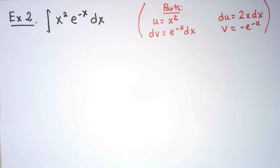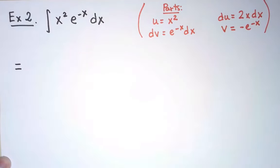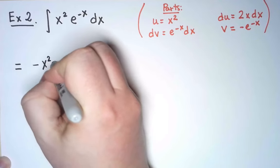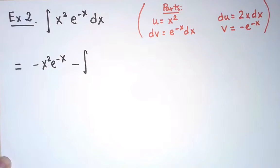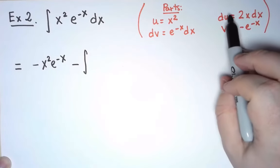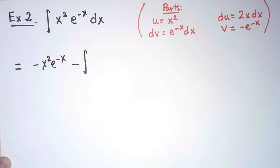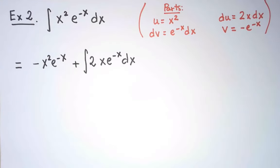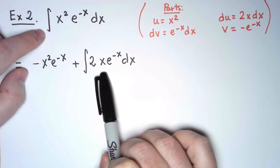With these choices, my integral becomes u times v, that is minus x squared e to the minus x, minus the integral of v du, that is minus 2x e to the minus x dx. I call this progress. I'm not done yet, but at least the new integral is simpler than the original, so we are improving.